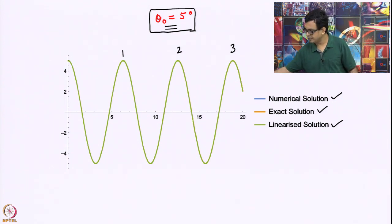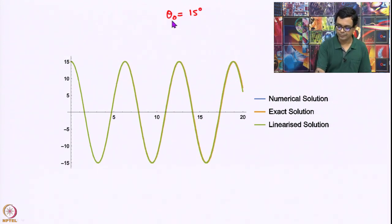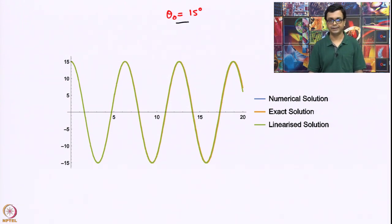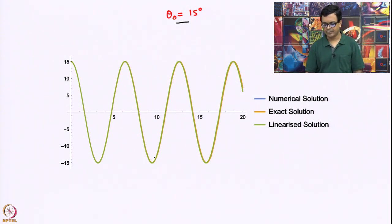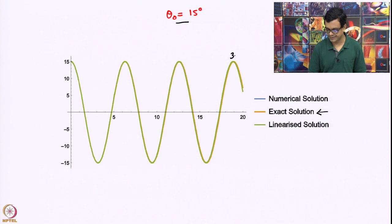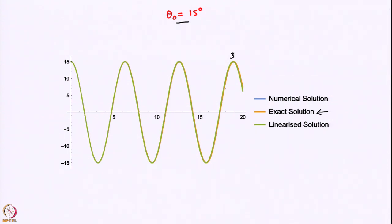Let us increase theta_0 slightly more. Now we have made theta_0 to be 15 degrees. You can see that they are almost on top of each other. However, towards the end of the third time period you can now see that the exact solution and the linear solution — the green and the orange curves — have a small mismatch for this initial angle.